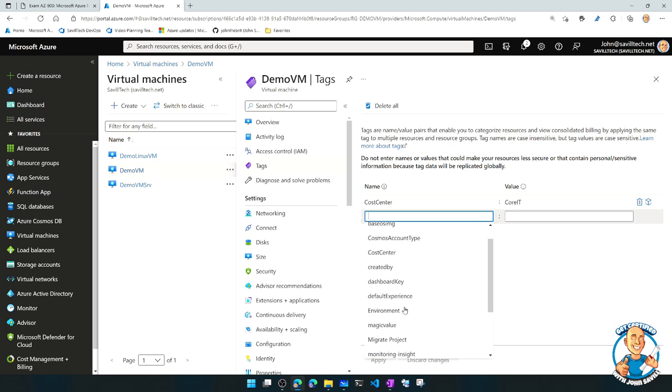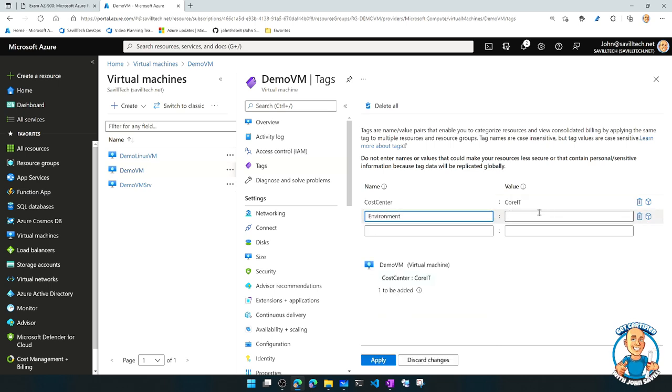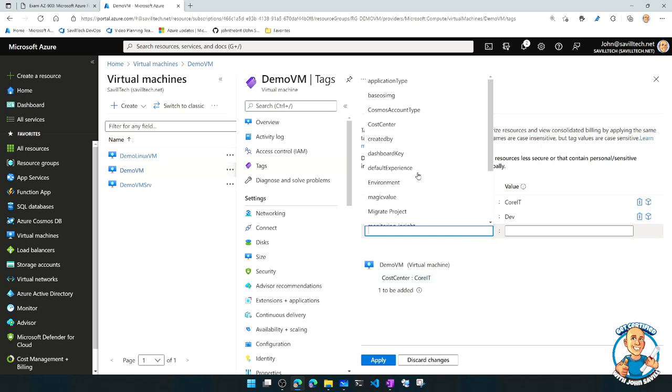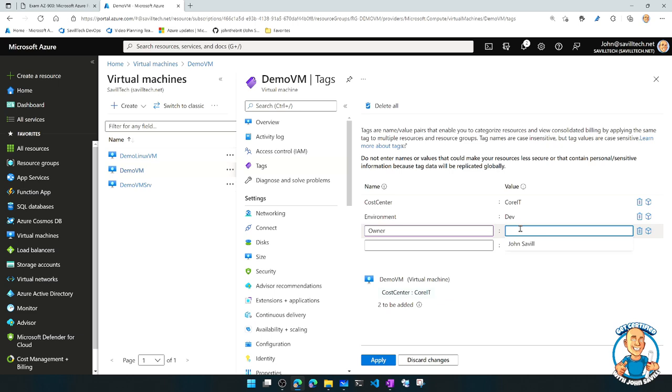Maybe I want things like, environment. And I could go and set particular environment. Maybe this is dev. And it's showing me just from the browser perspective values I've used before, but it's just key values. I might add in something like, for example, owner. Well, I'll say that's me.